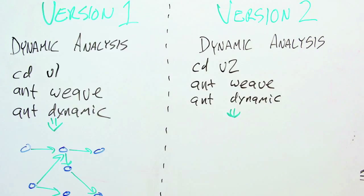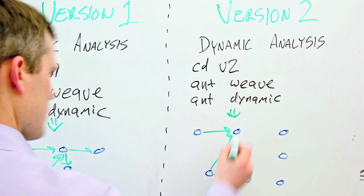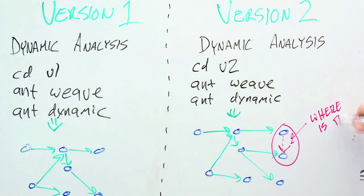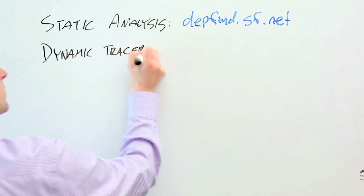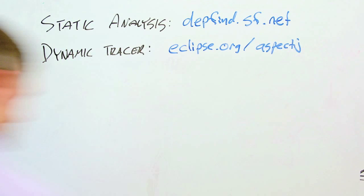As with static analysis, any technique for generating the dynamic call graph can be used, as can any means for executing the system. Our current prototype is implemented for the Java language and uses the dependency finder framework to generate the static call graph and a custom-built aspect to generate the dynamic trace.